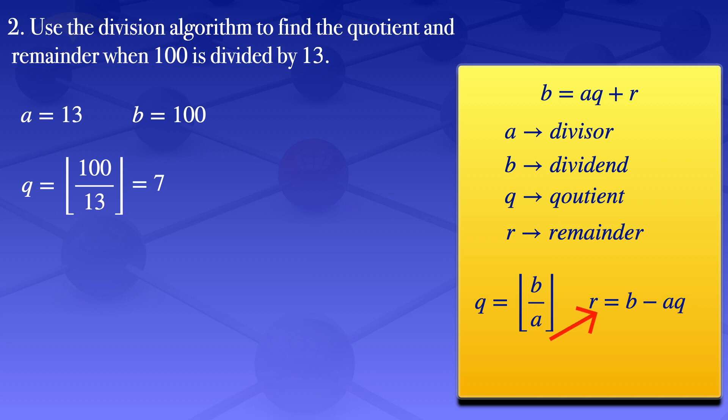For the remainder, we use this formula with the values of a, b, and q that we have. So our remainder will be 100 minus 13 times 7, which simplifies to 9. So the quotient is 7 and the remainder is 9.